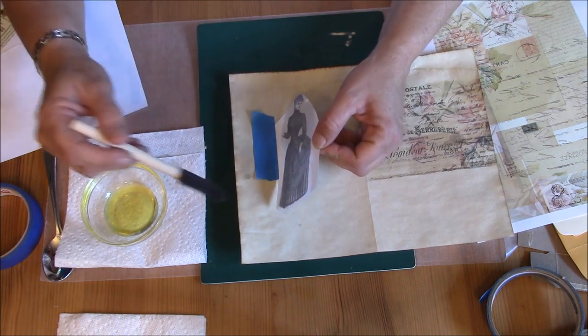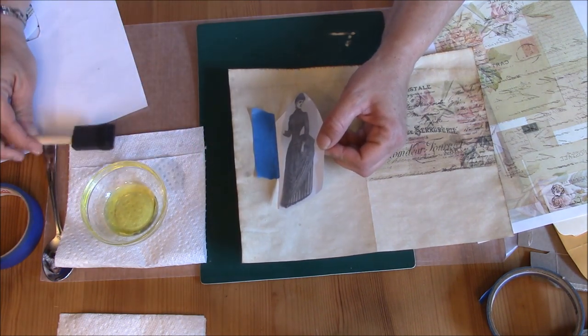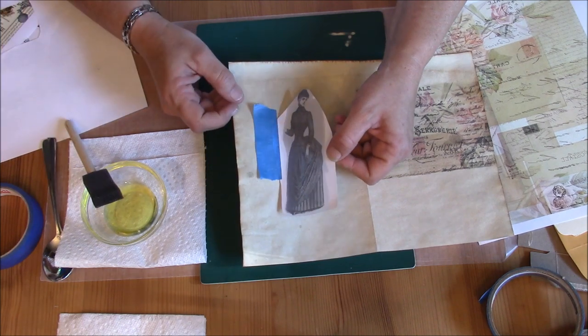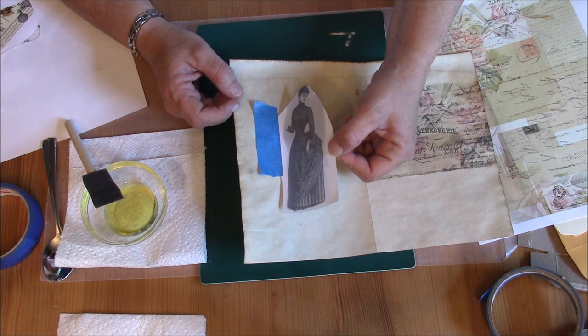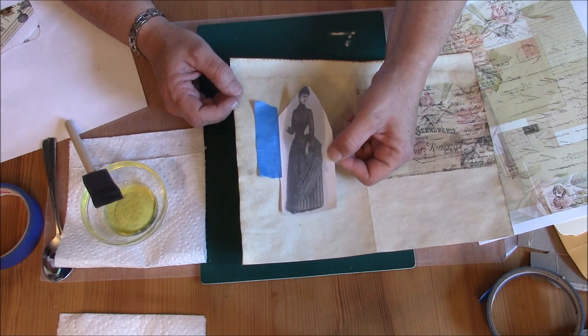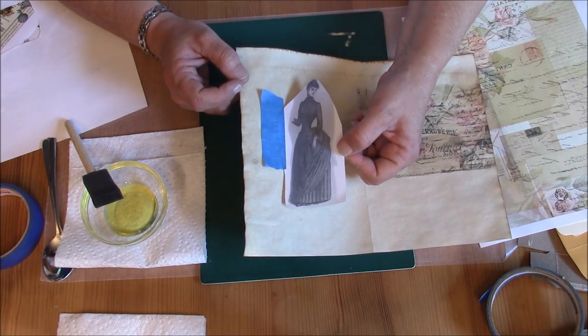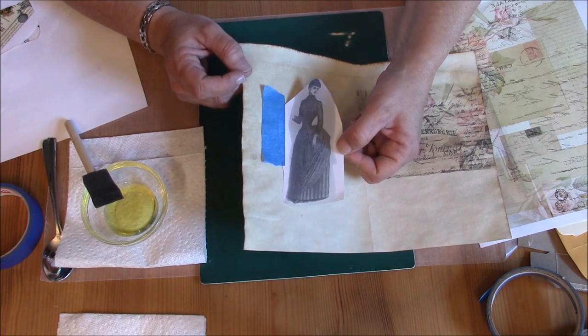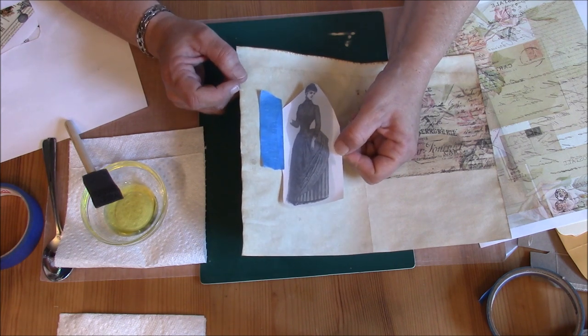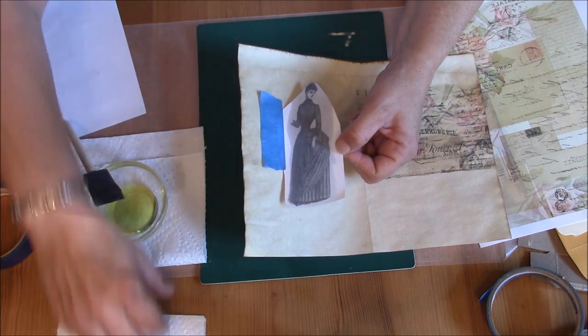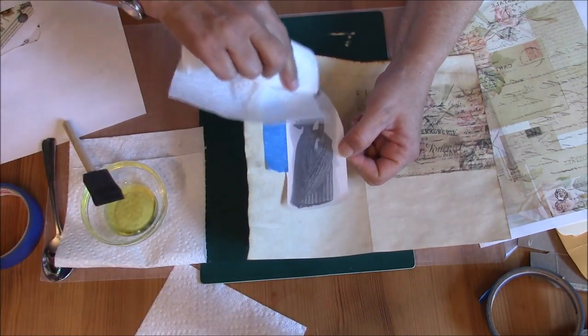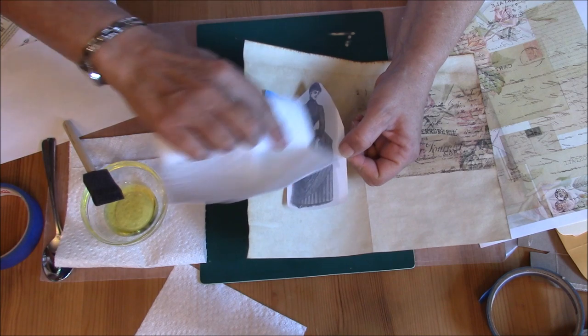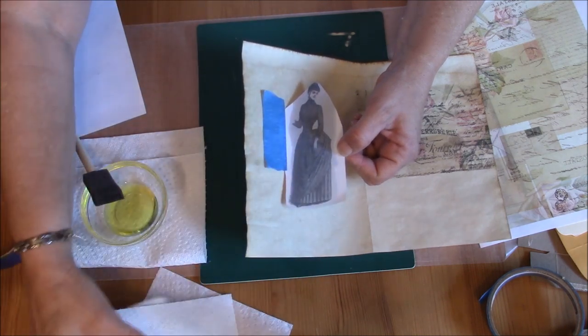I'm going to let that dry just a little bit. I see a little bit of puddling so I want that to be gone before I actually put that down onto the paper. I'll grab a paper towel and just blot that a little bit to speed up this process.